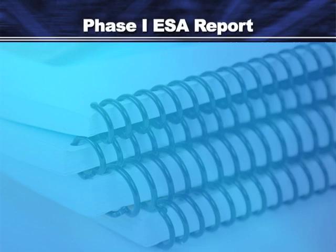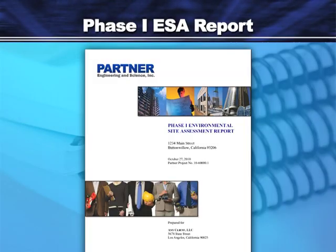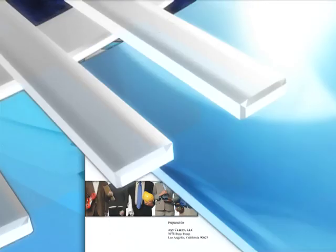The Phase I ESA must be conducted by or under the supervision of an environmental professional, or EP, who is qualified through specific education and experience requirements. Data and conclusions are detailed in the Phase I ESA report, which also should offer recommendations to address any identified concerns.